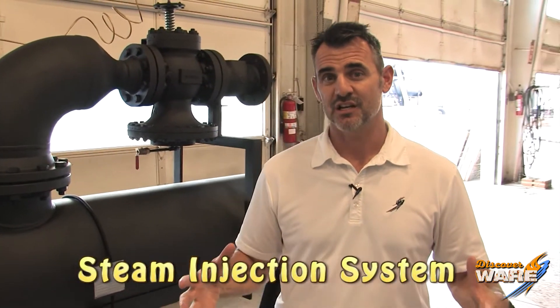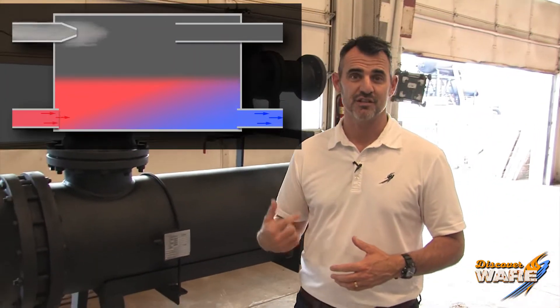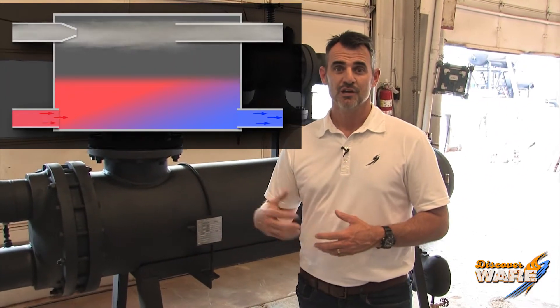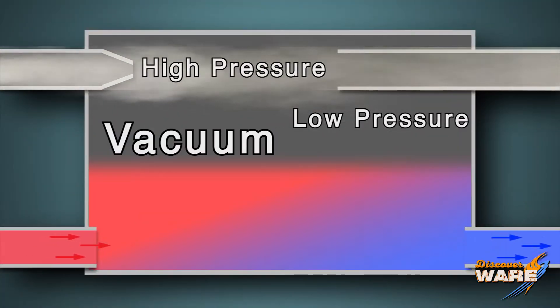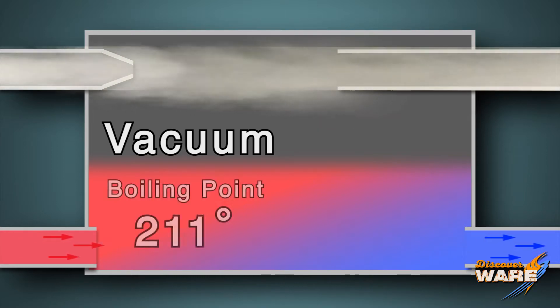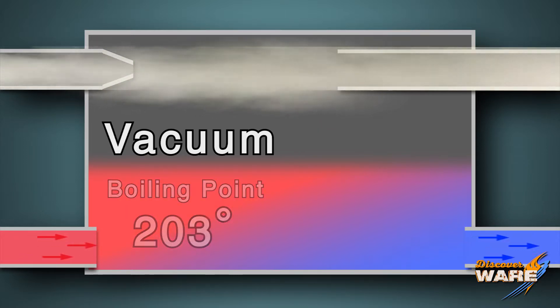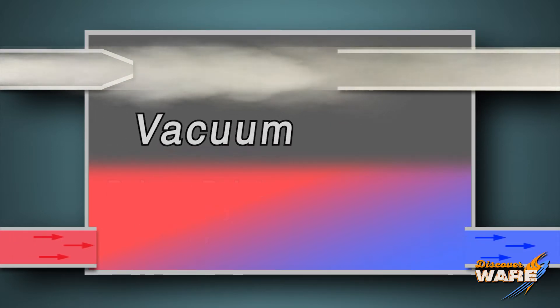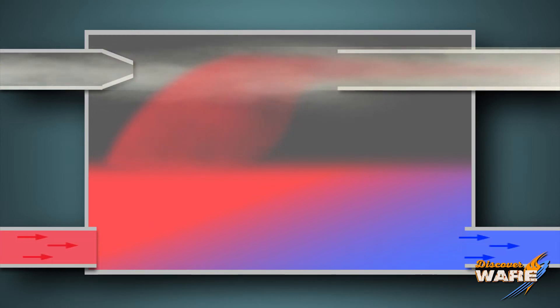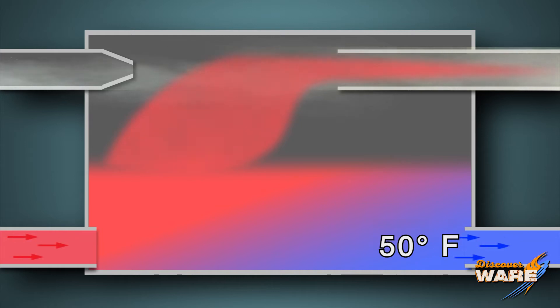They also had a very successful system, which is the subject of today's Steam Culture, called the Steam Injection System. A steam injection system involves using the velocity of the steam to create a vacuum. When that vacuum is created, it lowers the boiling temperature of the water so that it boils really fast. As the steam comes through quickly, it lowers the pressure and boils off the water, leaving you with basically 50-degree water.